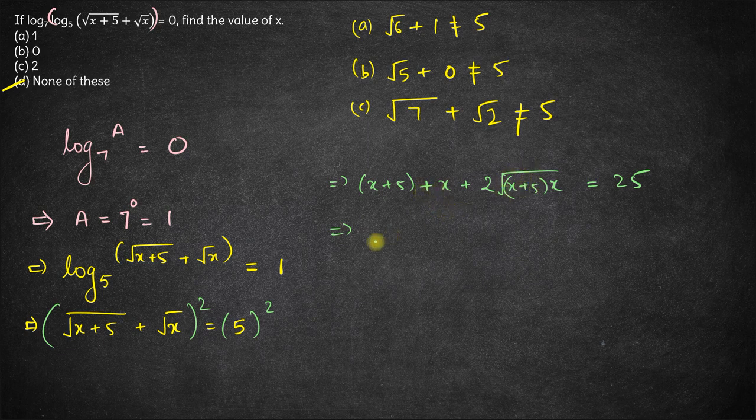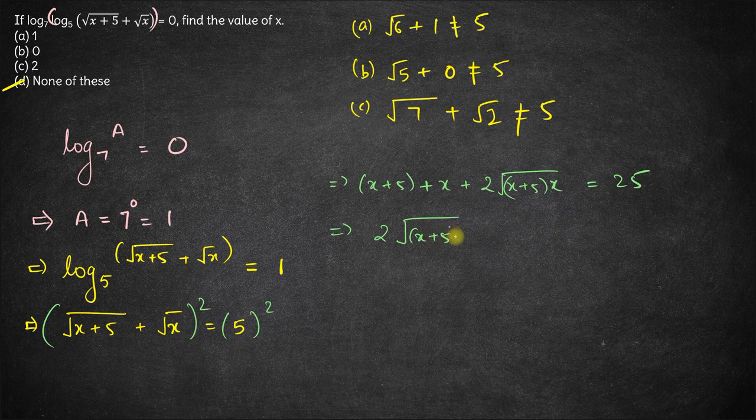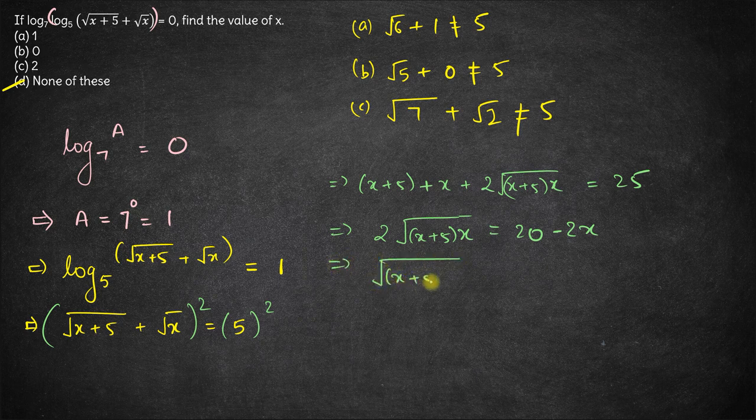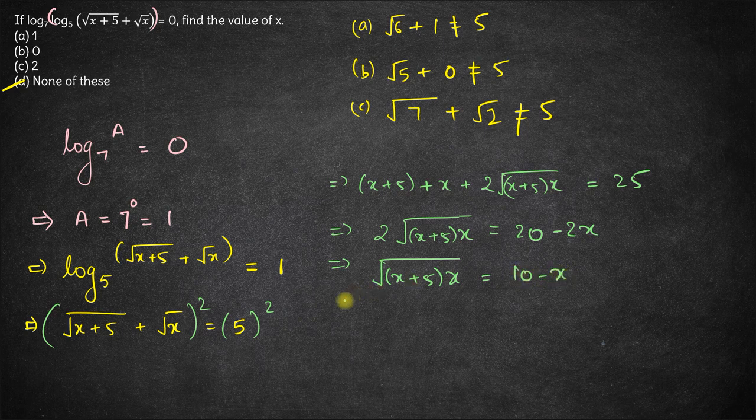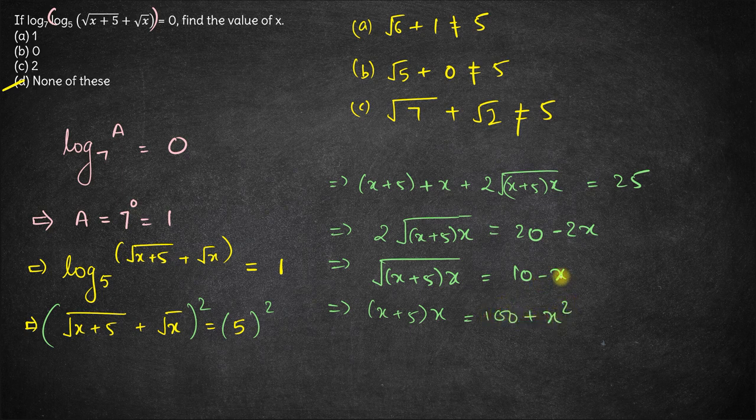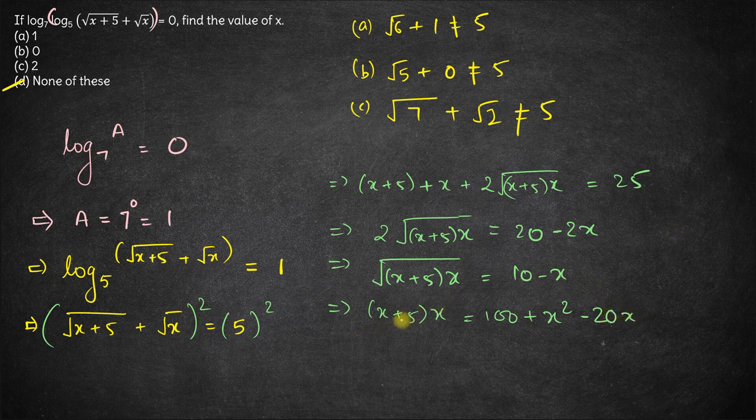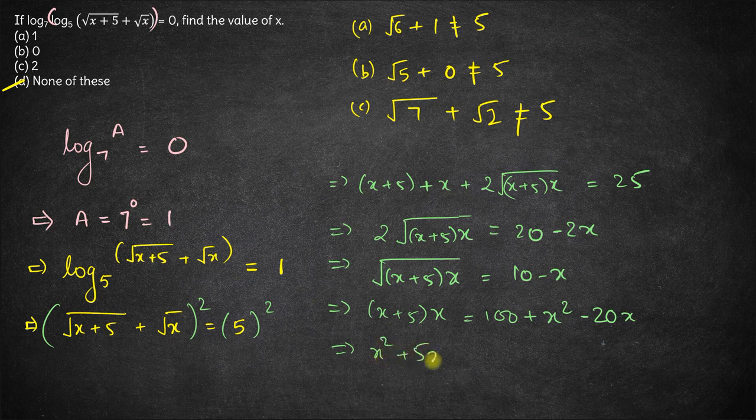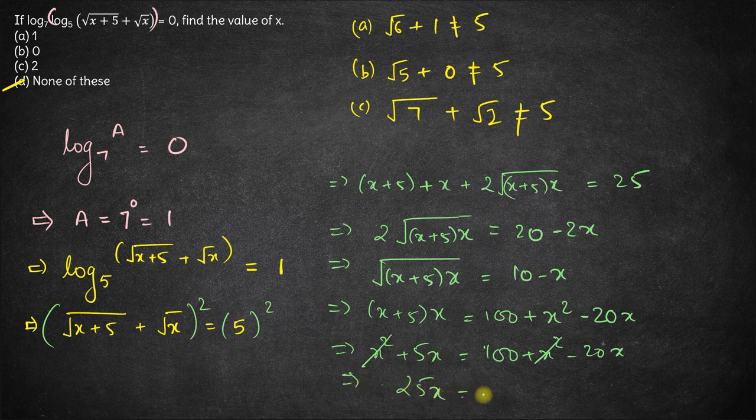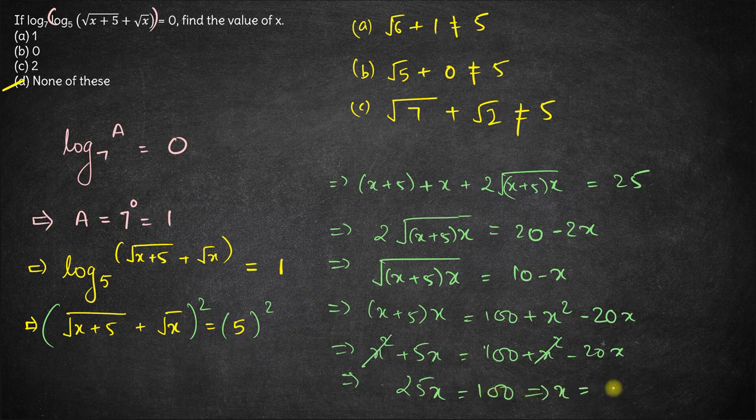Now keeping this over here, we have twice of square root of x plus 5 into x equals 25 minus 5 is 20, and x plus x is 2x goes that side becomes minus 2x. Dividing by 2 we get square root of x plus 5 into x equals 10 minus x. Now again taking square both sides, this part becomes x plus 5 into x, which equals a minus b whole square is a square plus b square minus twice of a into b which is minus 20x. And this effectively is x square plus 5x equals 100 plus x square minus 20x. x square x square cancels out, minus 20x comes on the left hand side becomes plus 25x which equals 100.